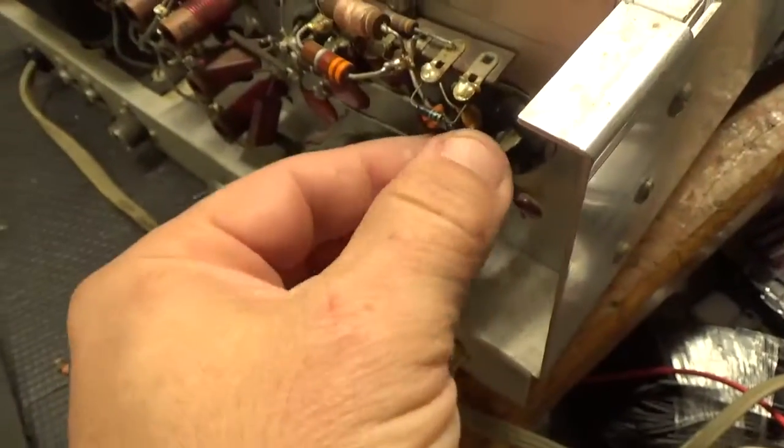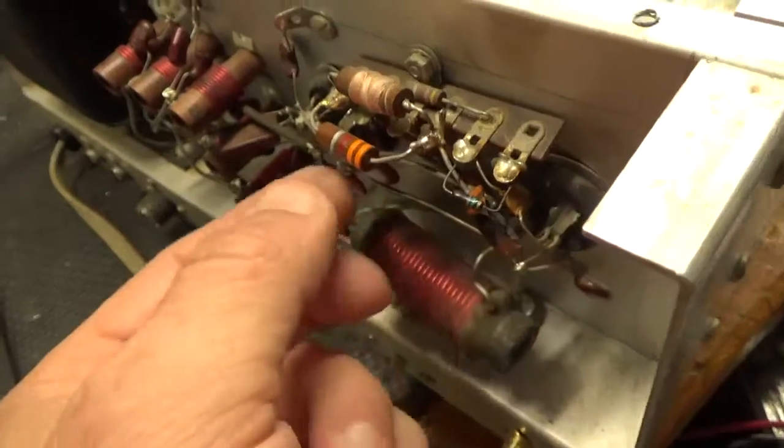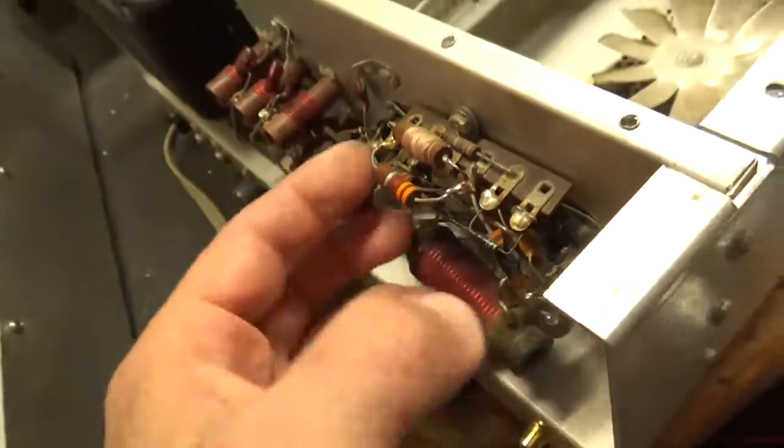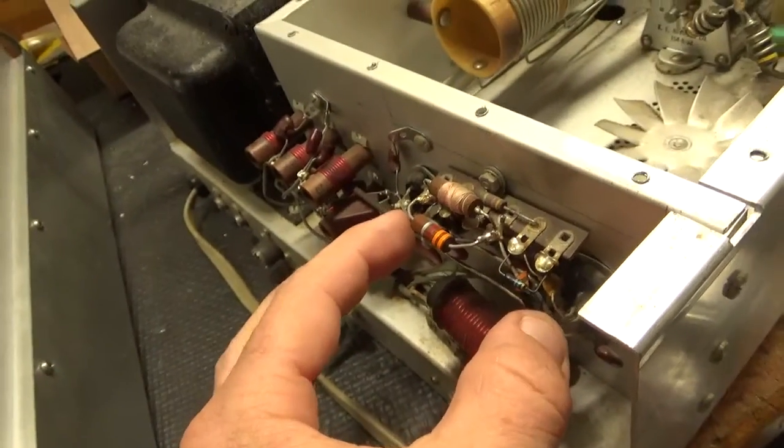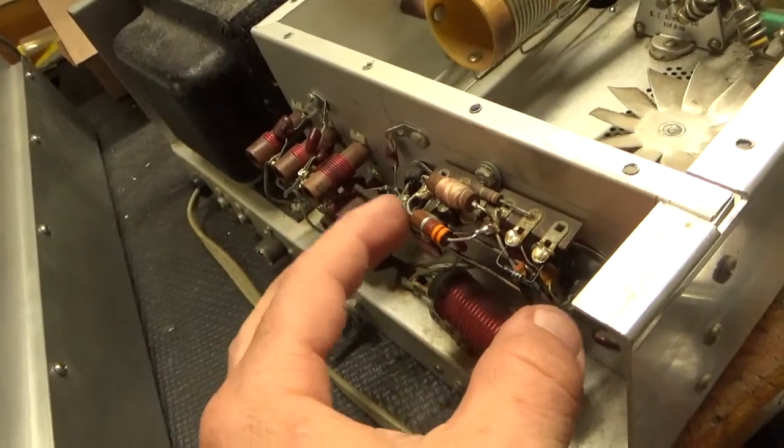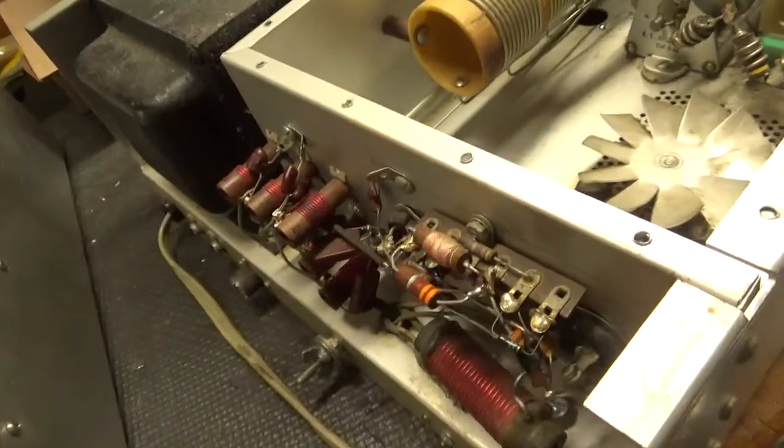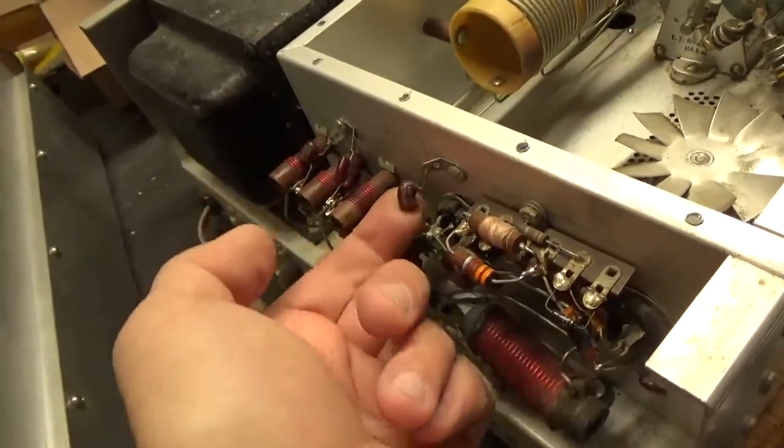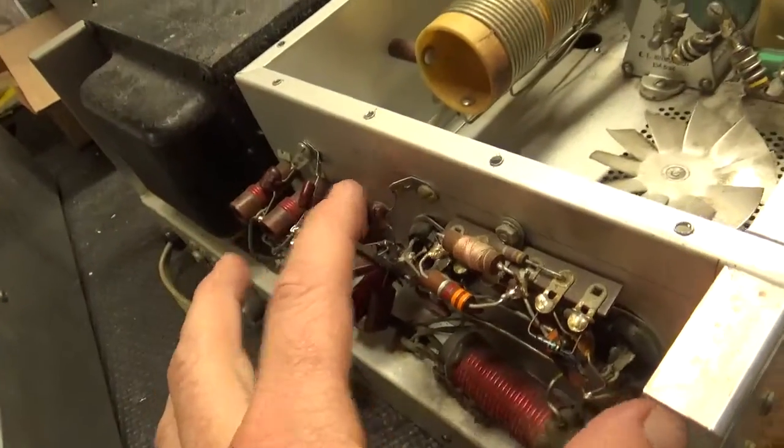As you can see, one of the grid loading resistors is blown apart, so I'll change both of these out with new 33 ohm 2 watt Allen-Bradley carbon comp resistors. Also change the silver dip mica capacitors, I always change those, one per socket.